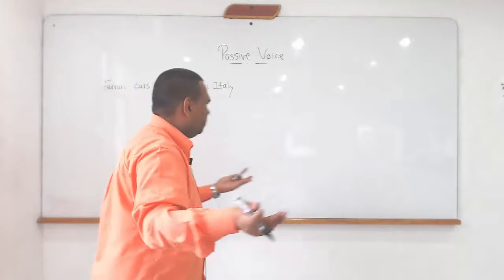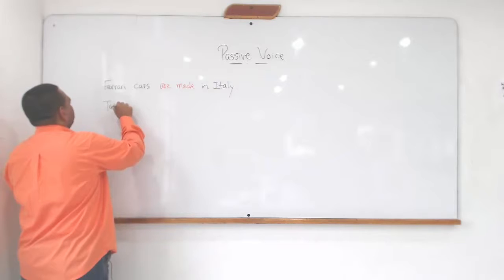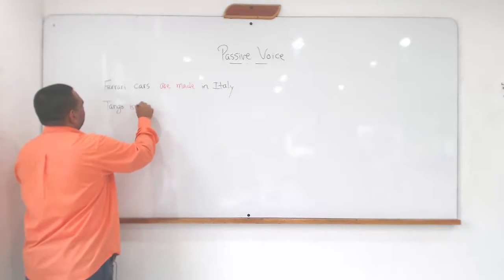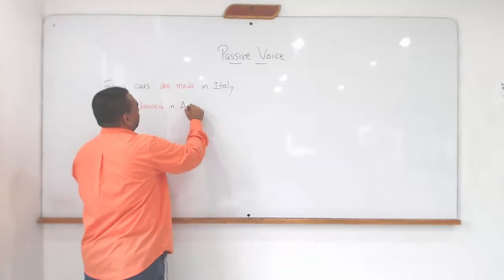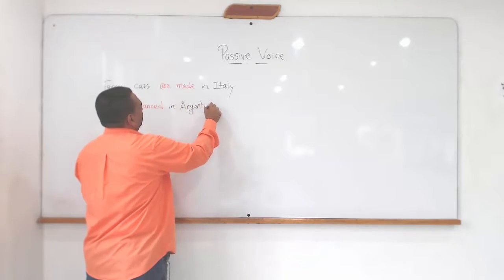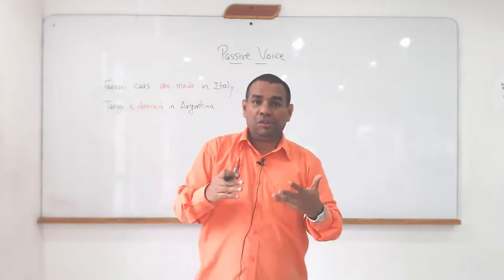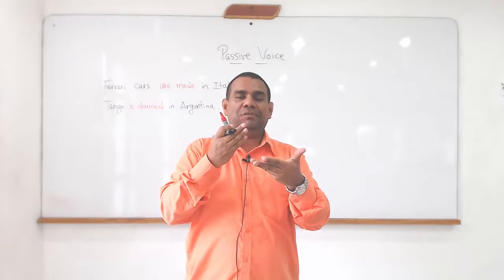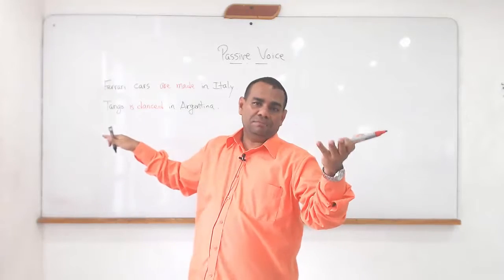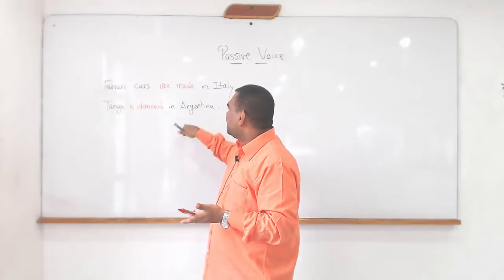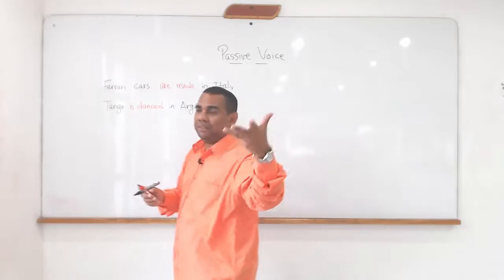I can also say something this way: 'Tango is danced in Argentina.' Whenever your intention as a speaker or writer is not to privilege the importance of mentioning who is in charge of doing the action, prefer to use a passive sentence — passive voice in general. Tango is danced in Argentina. I'm going to give you a third example.